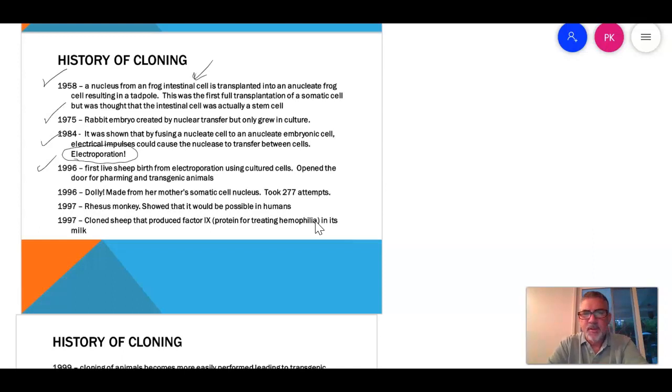We have a pause for 12 years. 1996, first live sheep from electroporation use of culture, Chelsea. So that opens the door for farming and transgenic animals. 1996, we get Dolly. The shocking thing about Dolly is they don't tell you it took 277 attempts to get a live birth sheep. So they took a mother's somatic cell and they put it into an anucleate egg, and then they brought it to term. And Dolly lived for a while. She just died of old age at a young age, because she had old DNA.